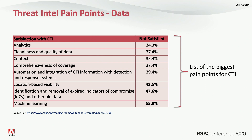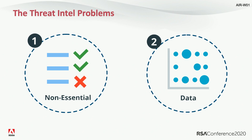The last pain point is machine learning. Machine learning can help us a lot with big data, but we have no clear approach on how to use it. Considering all of this, we can summarize into two big issues: first, Threat Intelligence is not something essential for our organization; and second, we have the data problem.